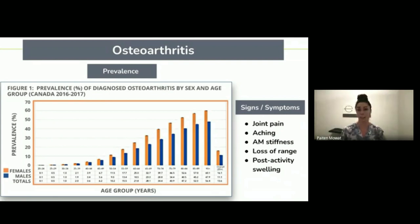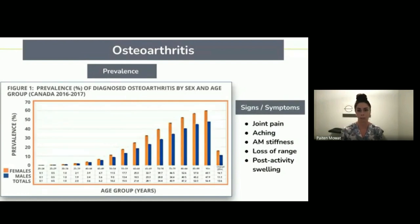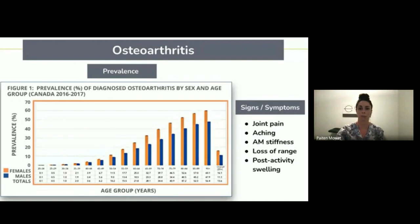Some of the signs and symptoms of OA most commonly include joint pain and aching, stiffness often in the morning as you're getting things warmed up and moving, and an overall loss of range of motion at a joint. It often feels worse with weight-bearing, and there can sometimes be swelling after activity. A true diagnosis can be done by x-ray or other imaging, paired with those signs and symptoms. So that is OA in a nutshell.